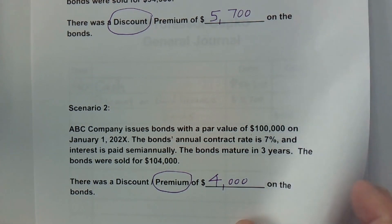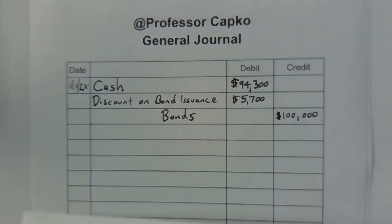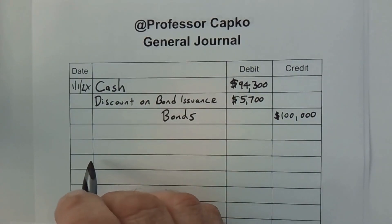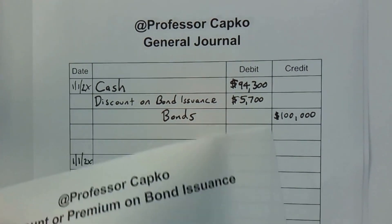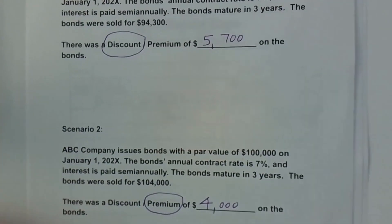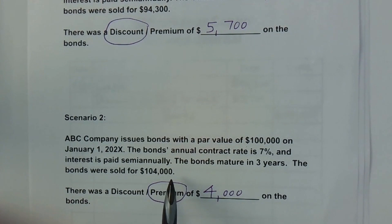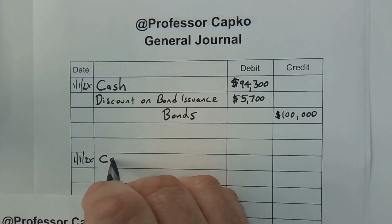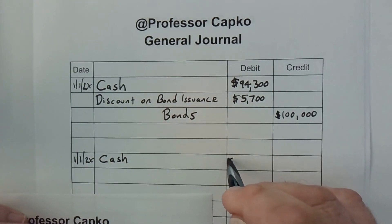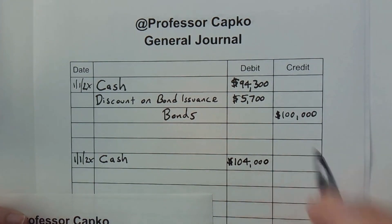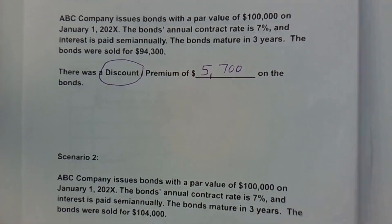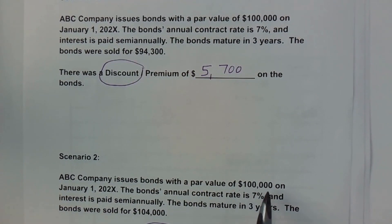I'm going to skip a space here and put the date: 1/1/202X. Again, I like to start with cash. In this case we received $104,000 cash when the bonds were sold, so I debit cash — being an asset that increased — for $104,000. And we know that we just created a liability of bonds payable for $100,000.